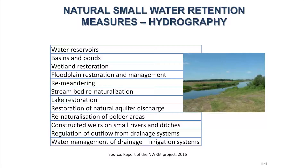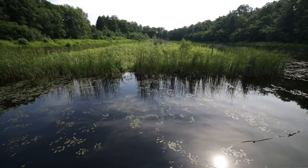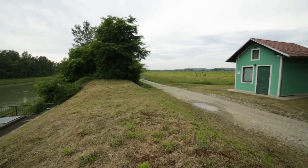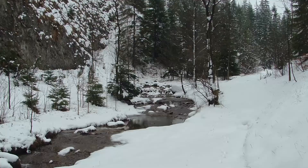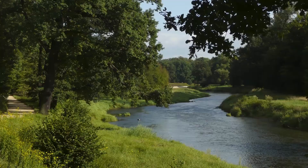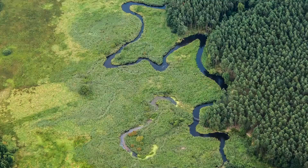Rural areas have special importance for small retention. The most important measures are constructed ponds and water reservoirs, floodplain restoration and management, river meandering, lake and pond restoration, and water management in irrigation and drainage systems. Water reservoirs are a very important part of small retention — they can be constructed for different purposes and all of them have some impact on the water balance. There are thousands of hectares of drained agricultural land; for example, in Poland, 30 percent of arable land is equipped with drainage systems, which is almost 80 percent of the country's surface.